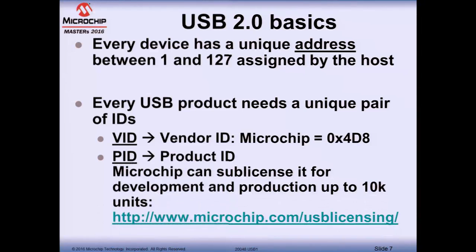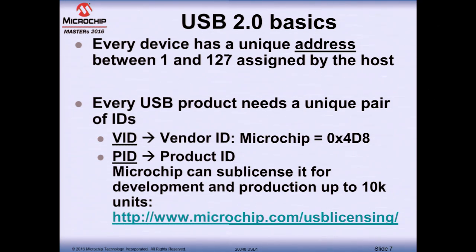The other ID is the PID, Product ID. Every product you make needs a unique VID and PID pair. Microchip has a free sub-licensing program where we can let you share our VID and give you a unique PID for development and production up to 10K units. More than 10K units means you can go to the Implementers Forum and get your own VID and PID. You fill in a form with your information and then get contacted to receive your unique PID.